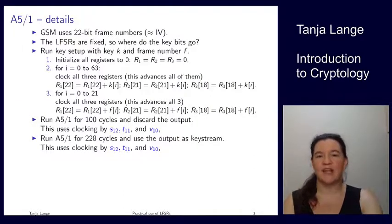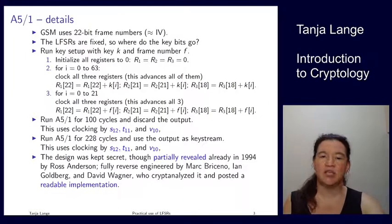Nowadays A5/1 is textbook material, but the design was actually kept secret. This is a design from the 80s which in 1994 Ross Anderson partially revealed. He said there was a guy supposed to give a talk, but received a notice from GCHQ, the British equivalent of NSA, that he may not speak. As a service to the public, Ross Anderson said here's what I understand the design to be and posted this. Then the full details were reverse engineered by Marc Briceno, Ian Goldberg, and David Wagner. They understood what it is, did some analysis, got the attack further down, and posted a readable implementation.